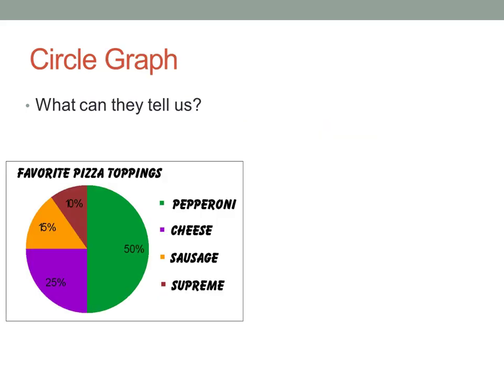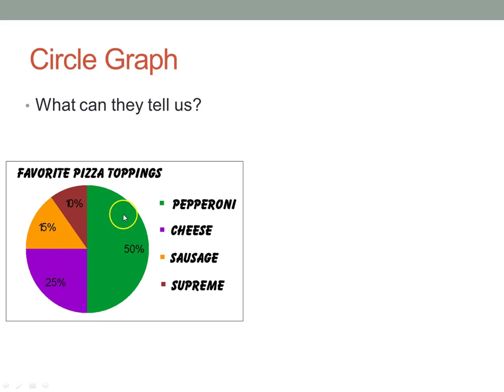Let's get into circle graphs and what they can tell us. Looking at favorite pizza toppings — and it looks like a pizza too — one slice is 50%, shown in green, so 50% of people's favorite topping is pepperoni. We can look at the key: just cheese is 25%, sausage is 15%, and supreme is 10%.